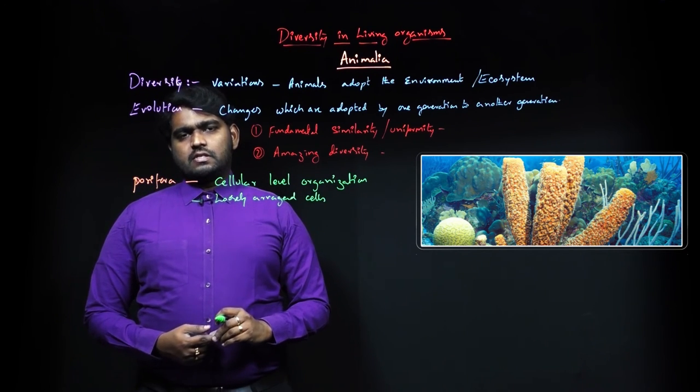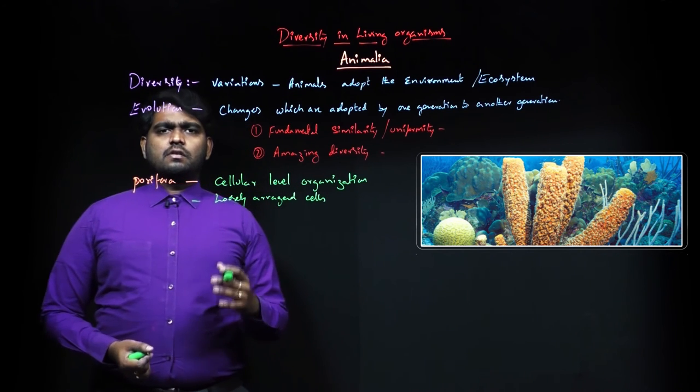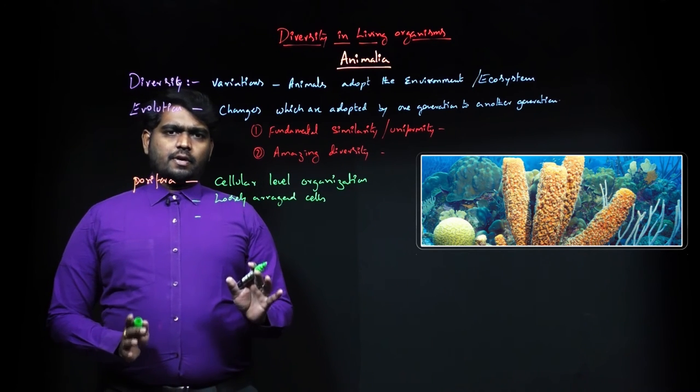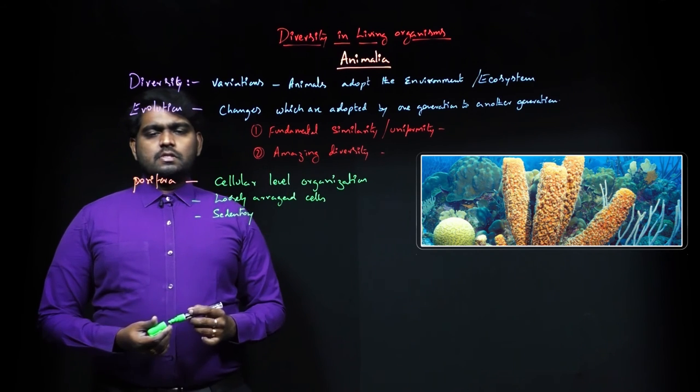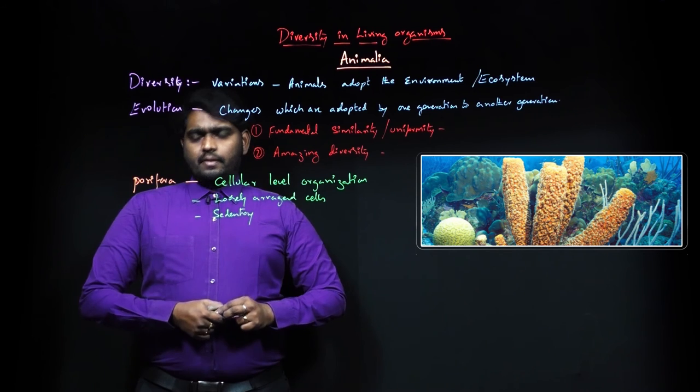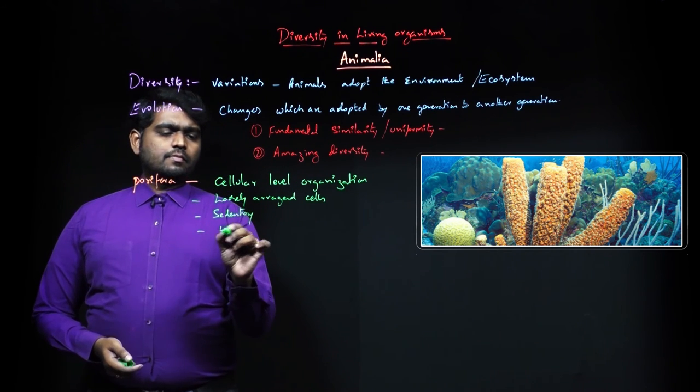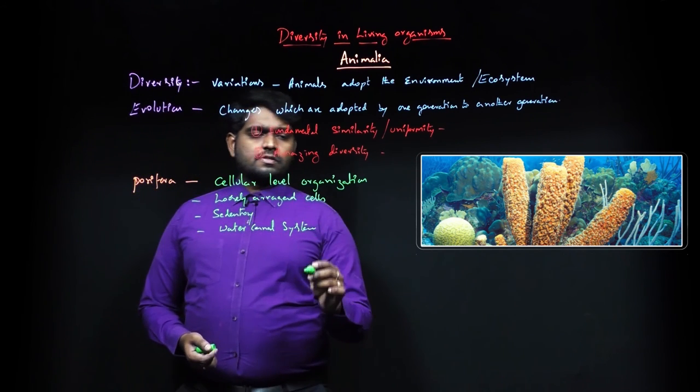Loosely arranged cells, and these are mostly sedentary. Sedentary means they are not motile, non-motile, which stay in a particular location for a longer period. They obtain food by water canal system process - ambulacral system or water canal system.